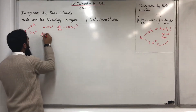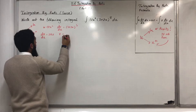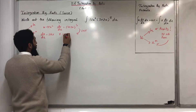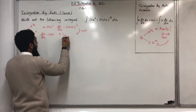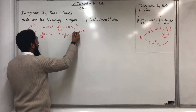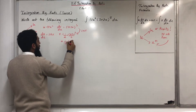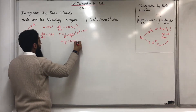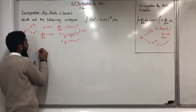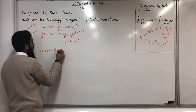du over dx is equal to 24x. v is obtained by integrating dv over dx. If I integrate, I get 1 over the coefficient of x, which is 2, multiplied by (3 plus 2x) to the power 6, divided by 6, which gives me 1 over 12 times (3 plus 2x) to the power 6. Now, I'm going to call i the integral of 12x squared times (3 plus 2x) to the power 5 dx.